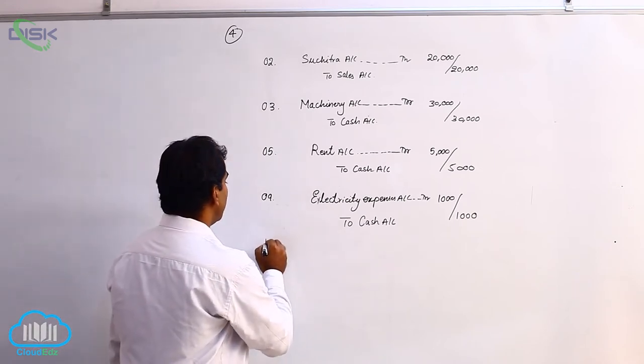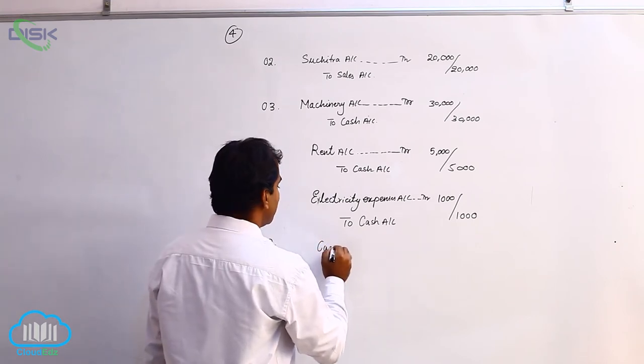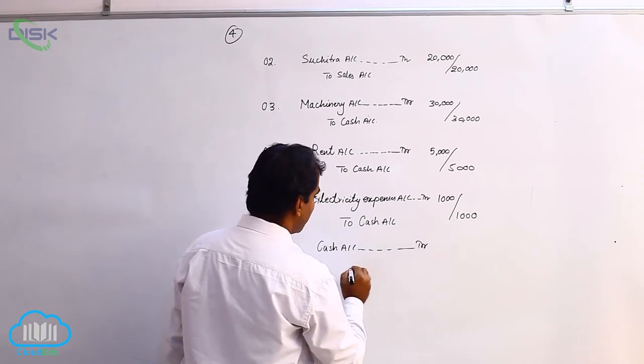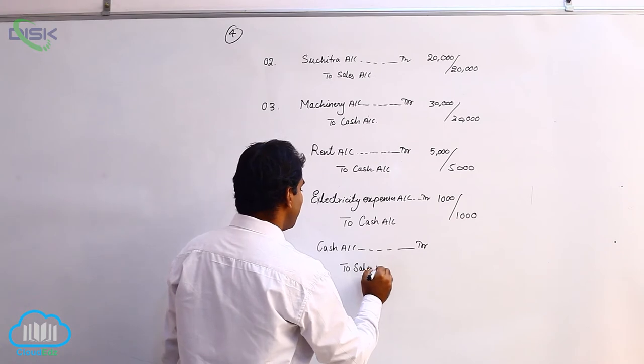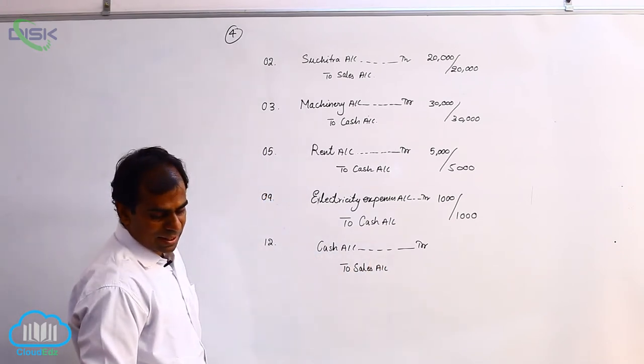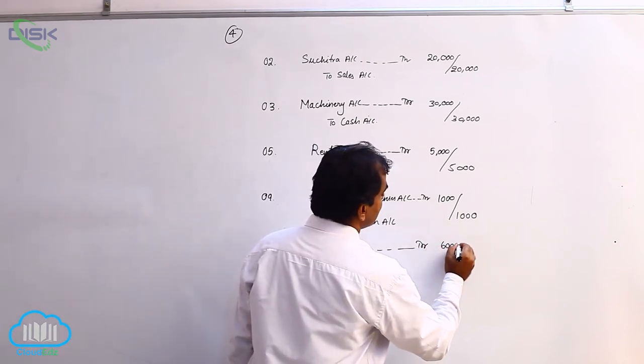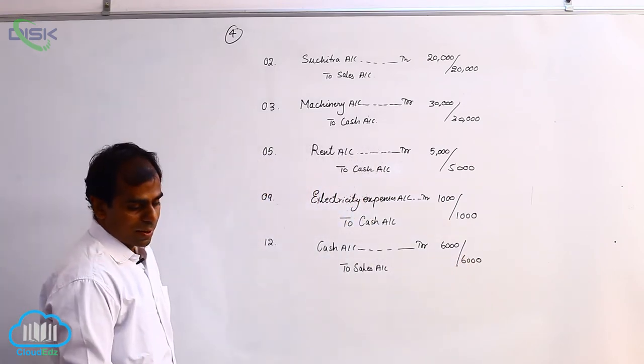Now, coming to twelfth, we have sold goods for cash. Cash is coming in, real account is coming in. We are debiting cash. So, goods are going out, real account is going out. Represented with the word sales we are crediting. So, cash account debit to sales is your journal entry and the amount being 6,000. Your narration would be being goods sold for cash.